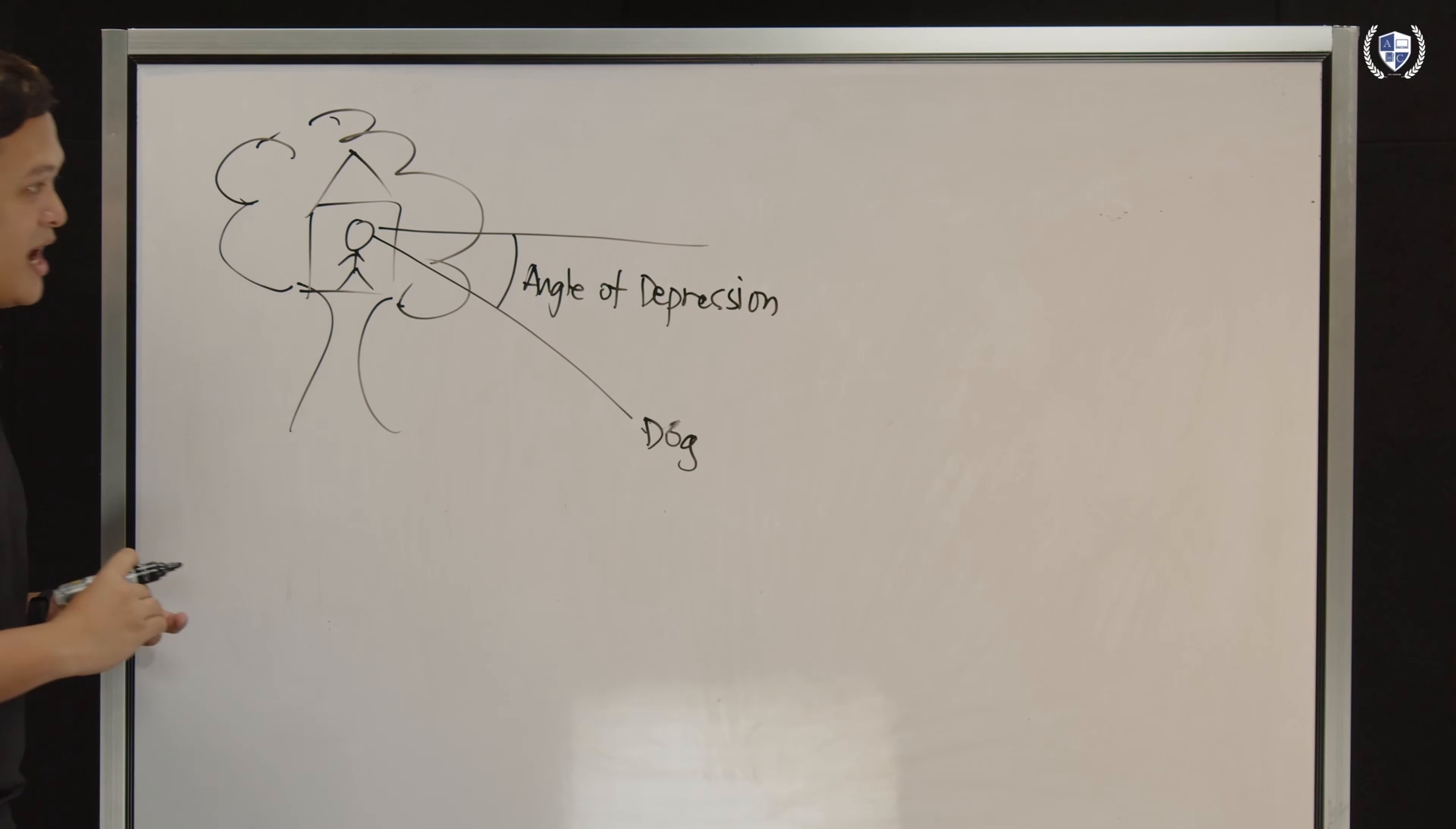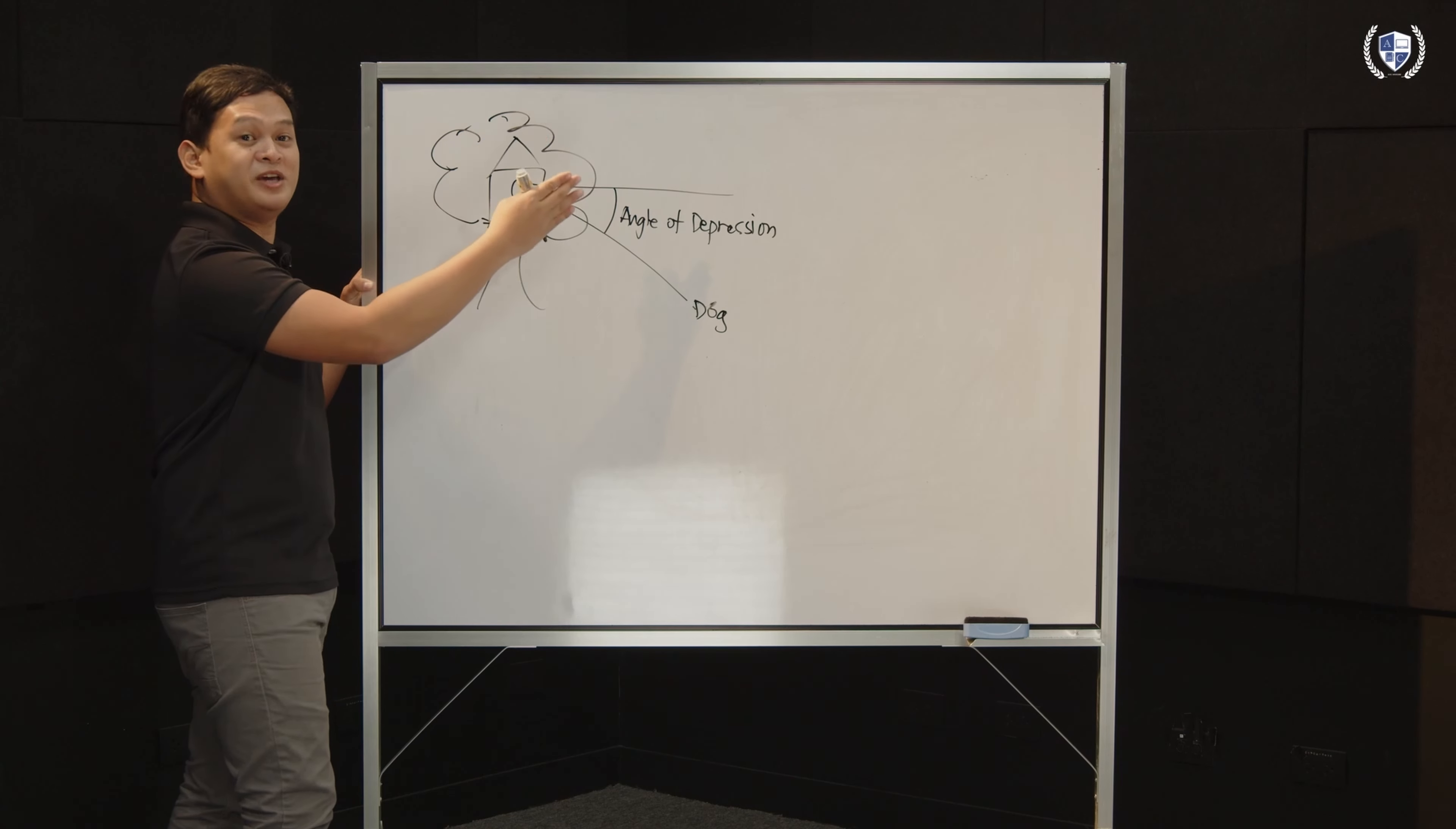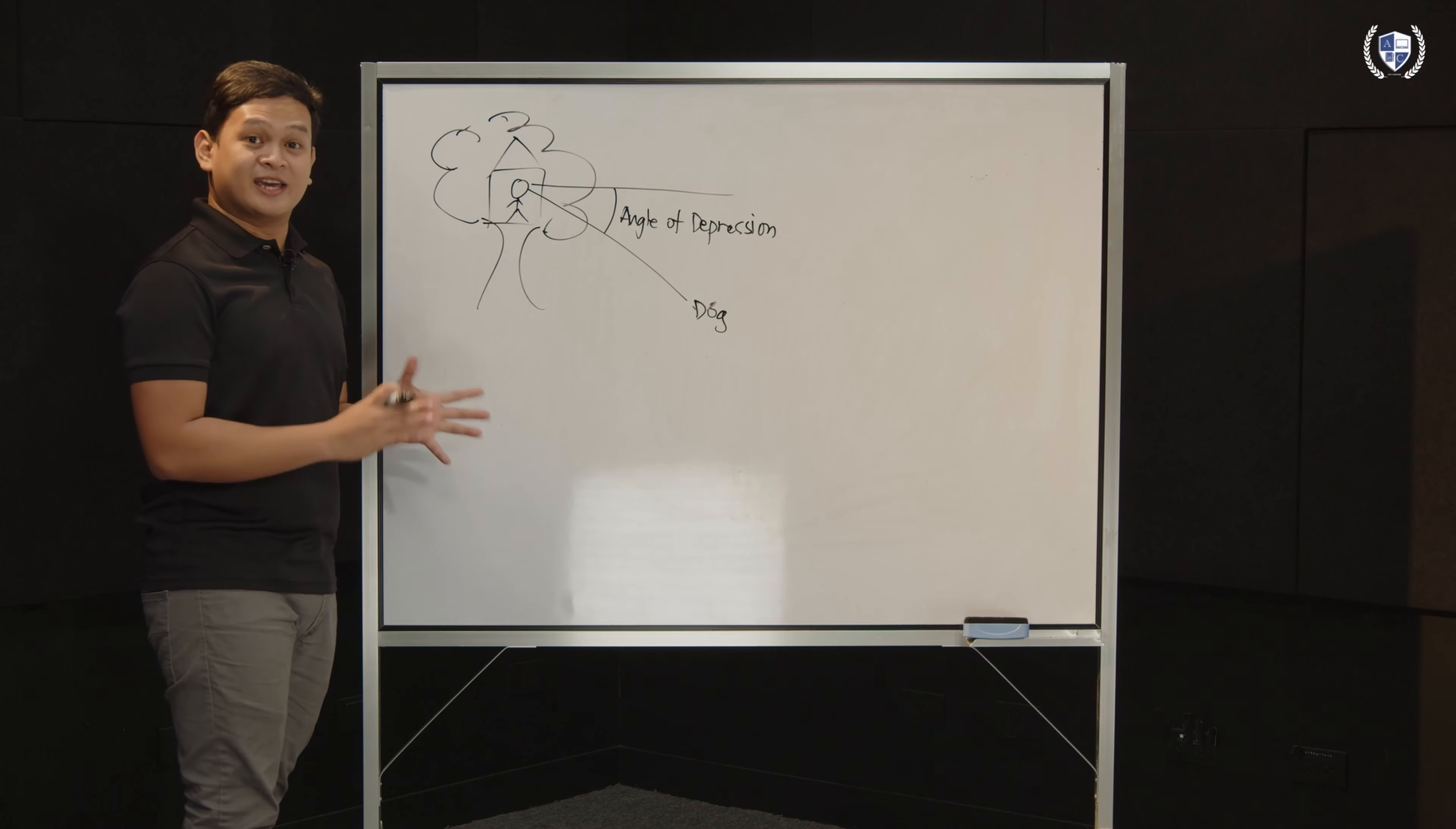Why? Because you have a line of sight. You have a horizontal. You formed that angle. And the object is lower than the observer. The observer is higher. Because in elevation, the observer is lower than what they're observing, like a tower, mountain, and so on and so forth. So, that is your angle of depression.